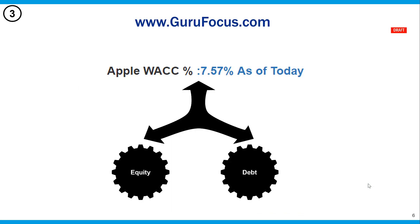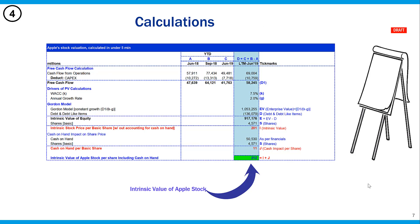Then go to GuruFocus.com and search for Apple WACC. You can also Google 'Apple WACC' and the first result should be from GuruFocus.com. Finally, do the calculations as mentioned earlier and come up with the intrinsic value of the stock on a per-share basis — which in this case is $212 — and then compare to what's currently listed in the stock market.